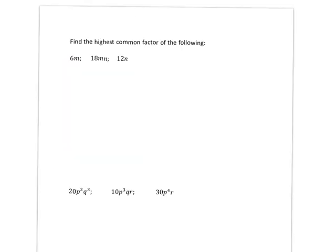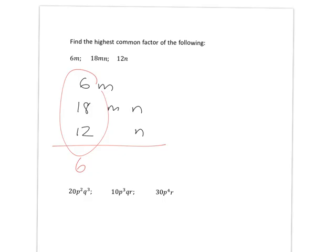I want you to do these two exercises for yourself — pause the video now and find the highest common factor. Let's go over what you've done. Writing the terms in order for the first one: the highest common factor of the numbers is 6. Can I include m? No, because 12n doesn't have an m. Can I include n? No, because 6m doesn't have an n. So the highest common factor is just 6.